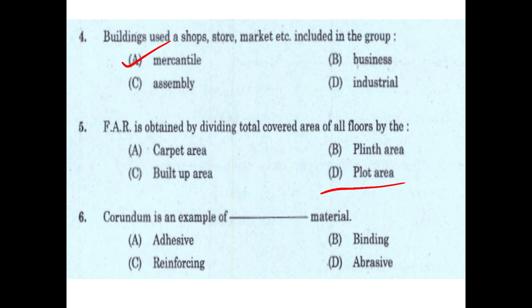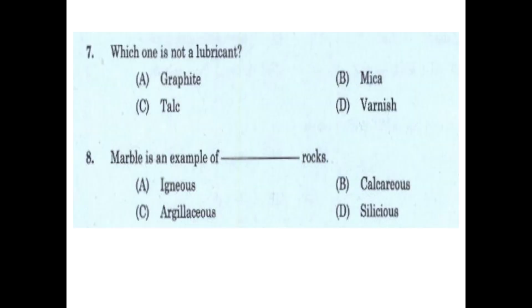Corundum is an example of — option D — abrasive material. Which one is not a lubricant? Options are: graphite, mica, talc, varnish. The answer is option D, varnish.